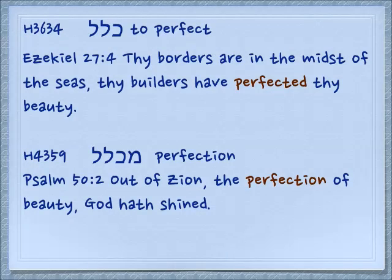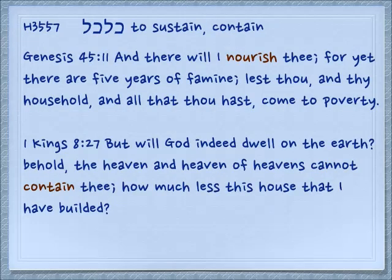We have talked elsewhere about the doubling of letters making what is called a geminate verb, so we see two lameds at the end. Ezekiel 27:4: 'Thy borders are in the midst of the seas, thy builders have perfected thy beauty.' A noun from this: michlal, Psalm 50:2: 'Out of Zion the perfection of beauty, God hath shined.' Sometimes there are what are considered four-letter roots with actual doubling. Kal-kal, kilkel — to sustain or to contain — something that holds something completely or gives you the sustenance to remain complete.